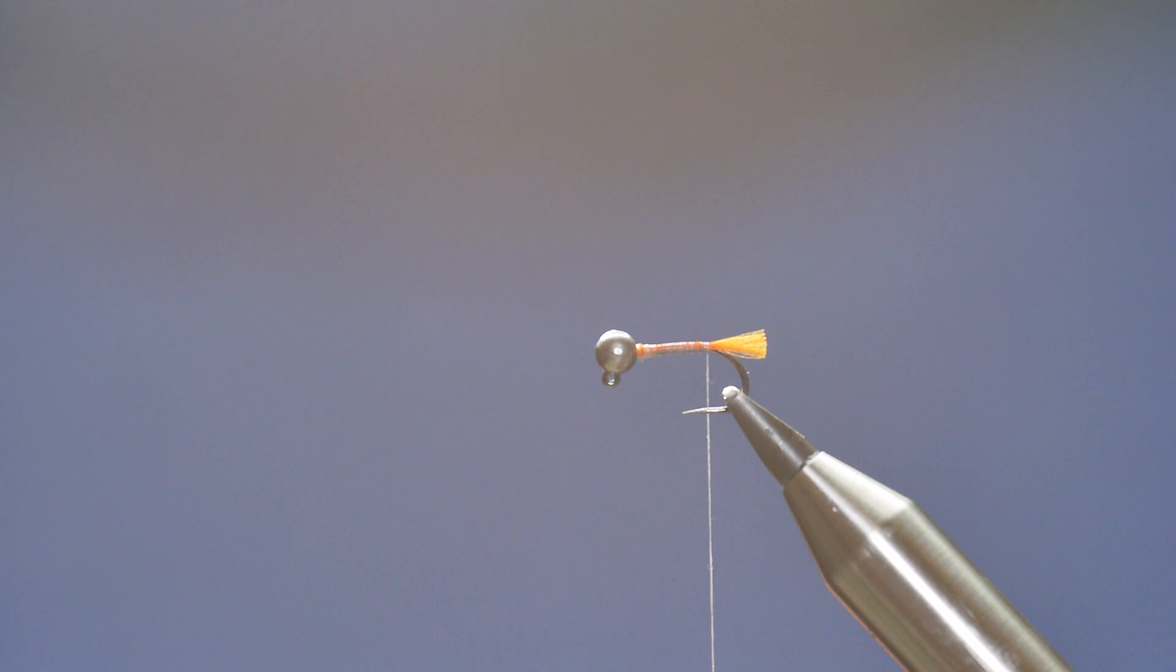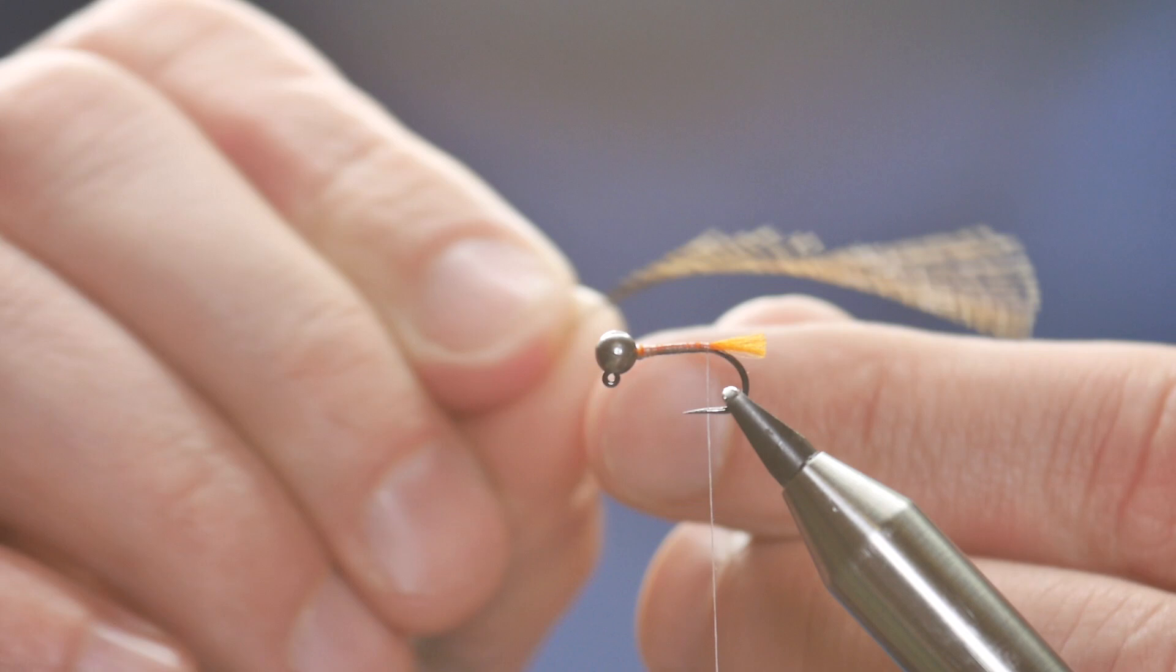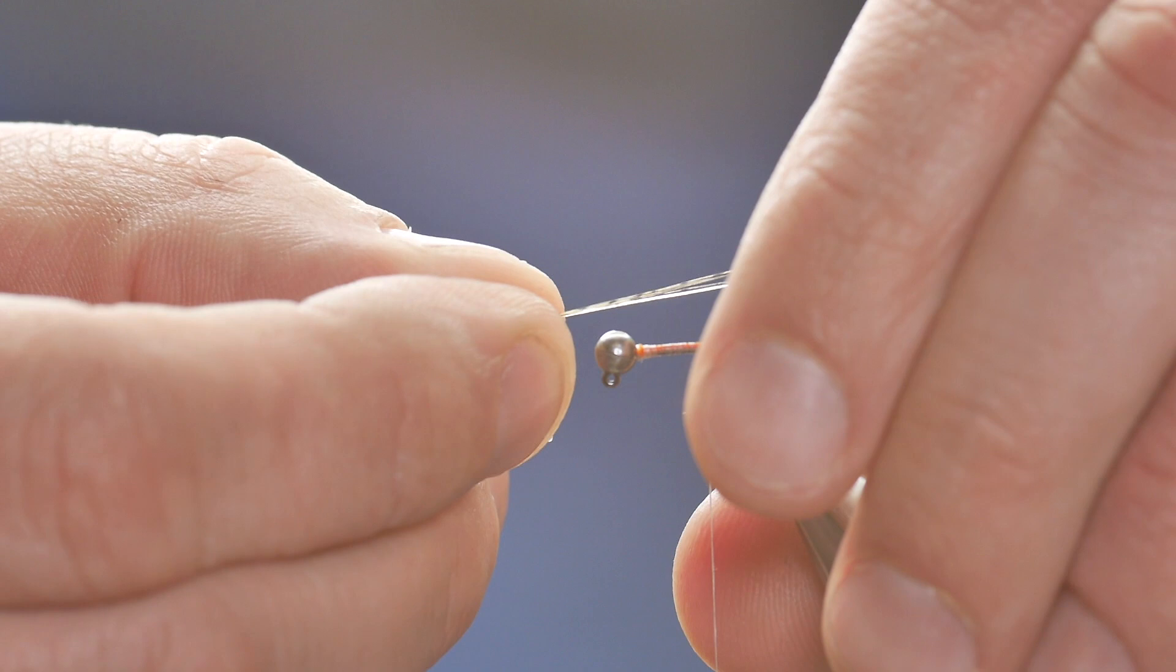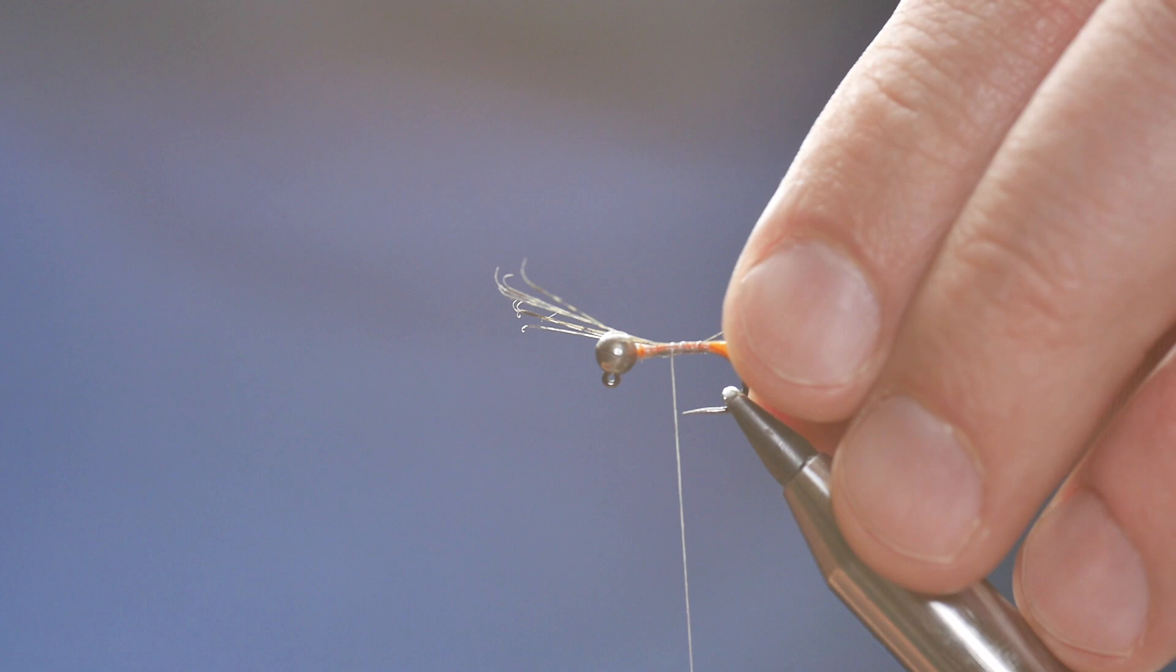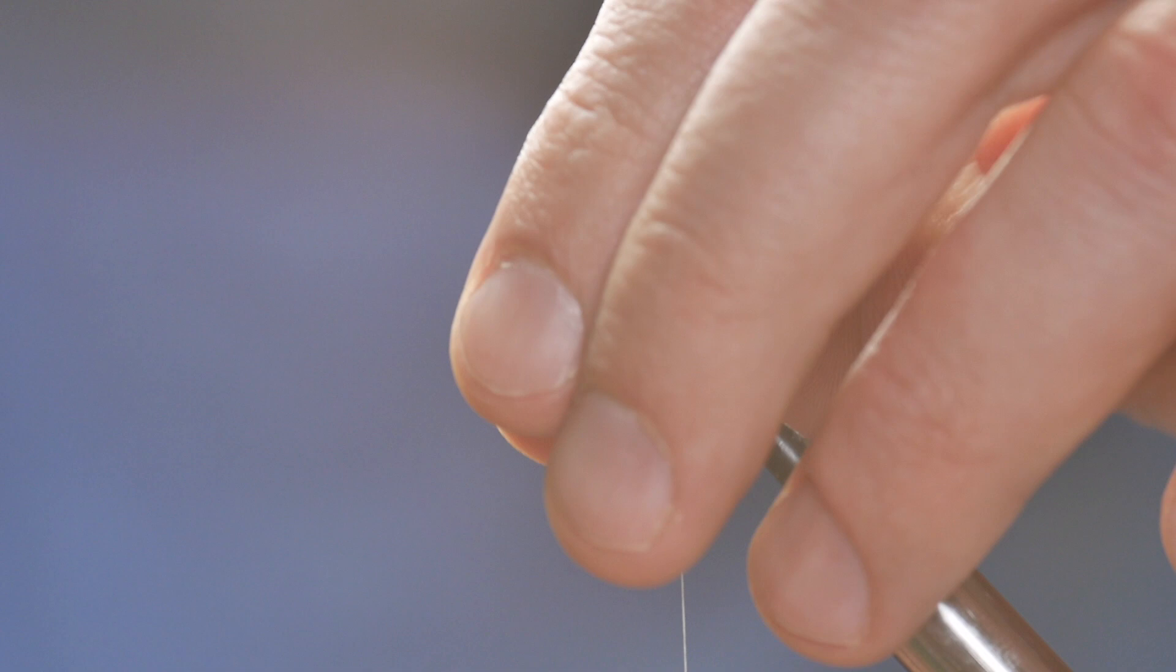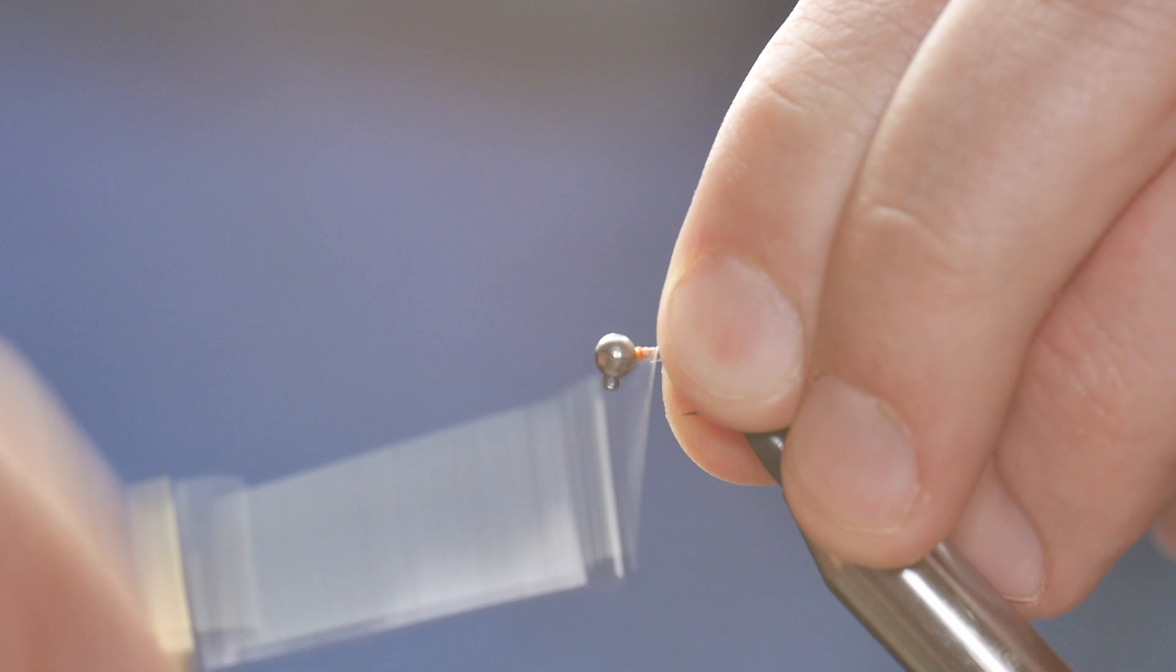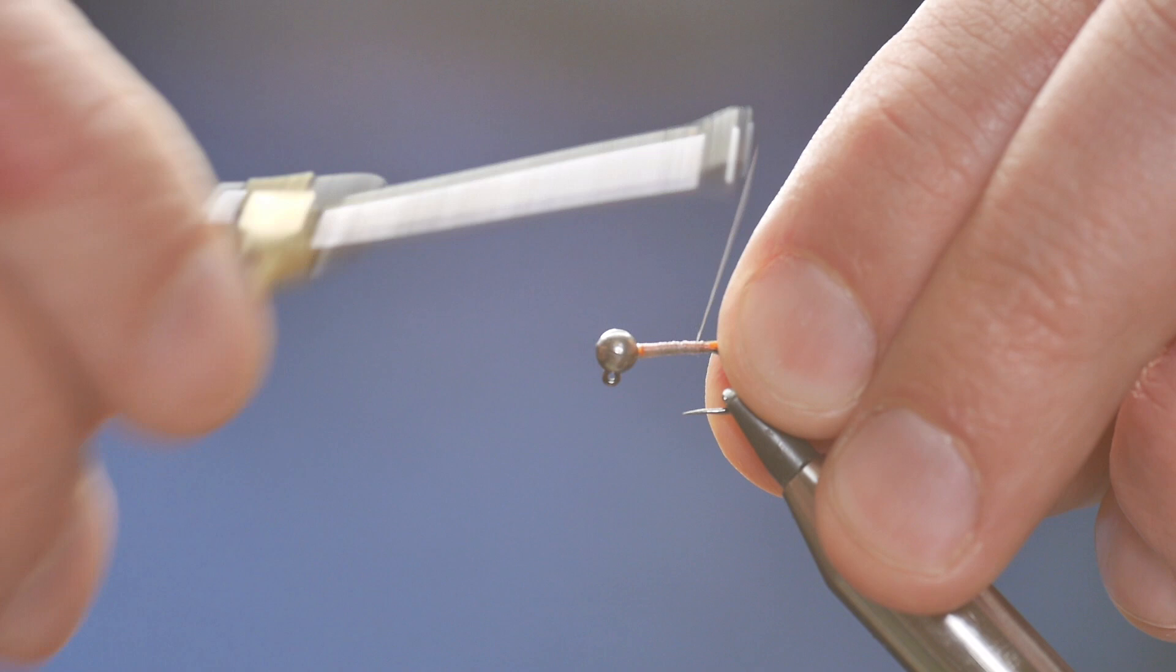The next piece of tailing is Cock de Leon. I'm going to take approximately half a dozen fibers from the stem and I want that to protrude about an eighth of an inch past my orange tail. I'm just going to pinch that up so I can see what I'm doing and come back and pin that down in place. Next I can remove my excess materials and tidy this up. I want to build a nice taper into my body.